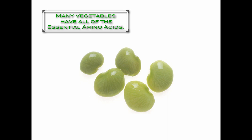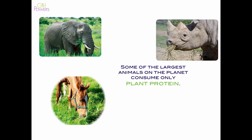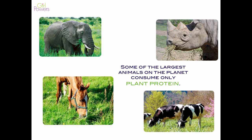Many vegetables have all of the essential amino acids. In fact, some of the largest animals on the planet consume only plant protein, so it's no surprise that plant protein is, in fact, a complete protein.